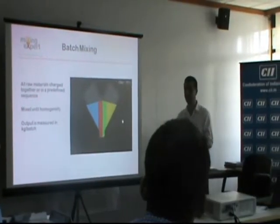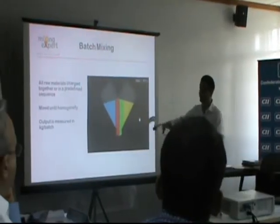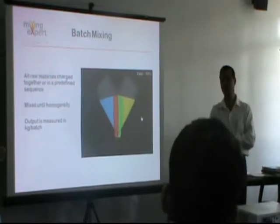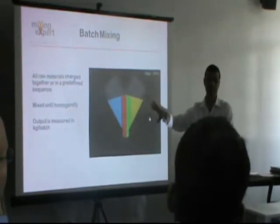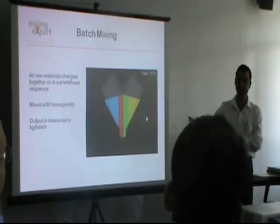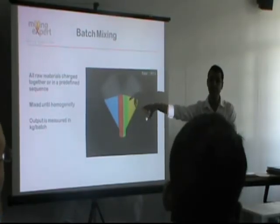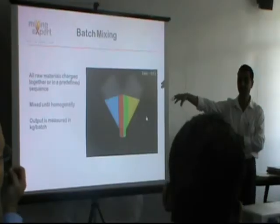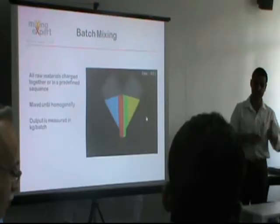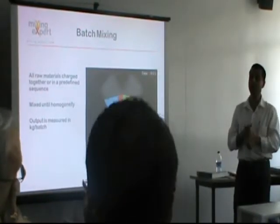One very important concept when it comes to specifying a mixer is that the output is measured in kilograms per batch, but the output is not defined in kilograms per batch. A mixer can only be designed for a volumetric capacity. What weight you could load into a mixer depends on the material properties — how dense the material is. When defining a mixer, the working volume is important.